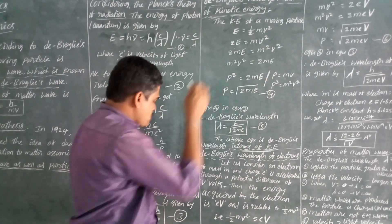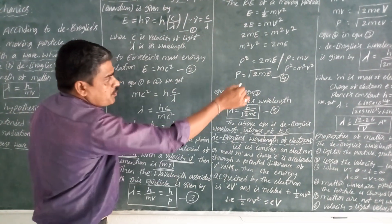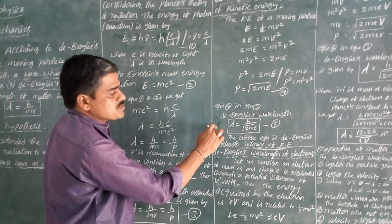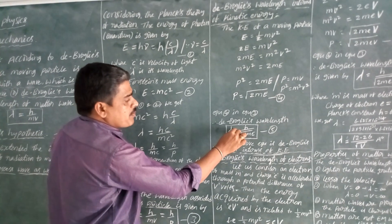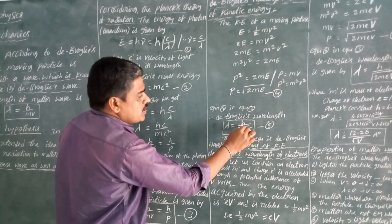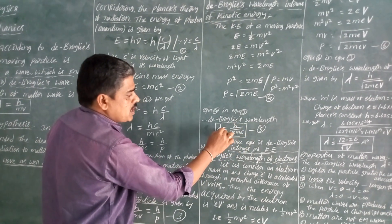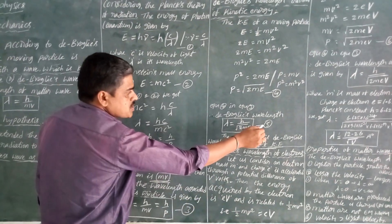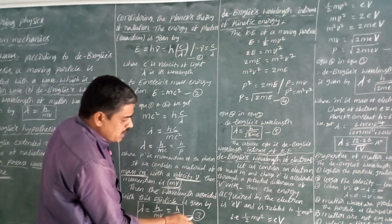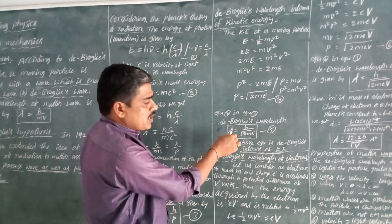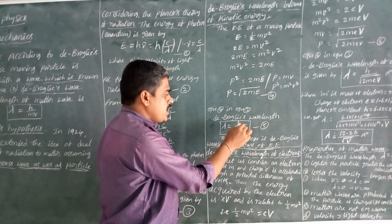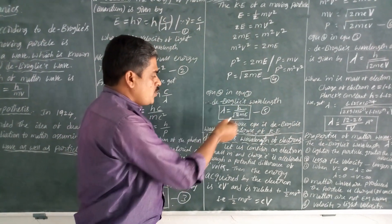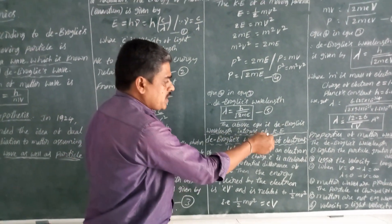Substituting the value of p into the wavelength equation, we can get the De Broglie wavelength in terms of kinetic energy: lambda is equal to h by square root of 2mE.